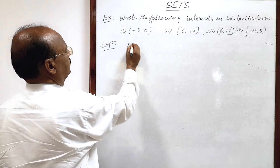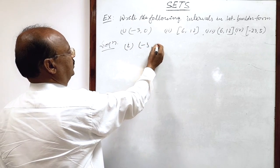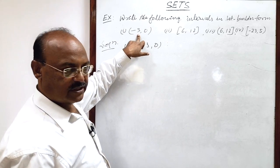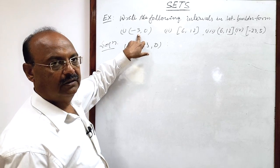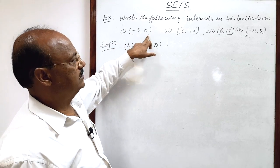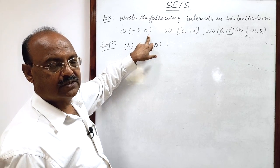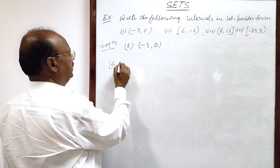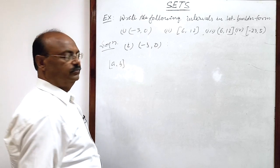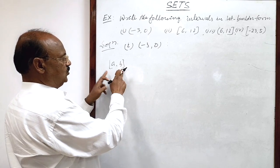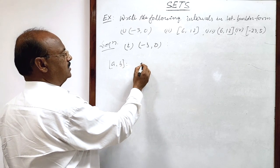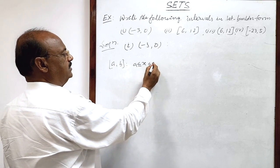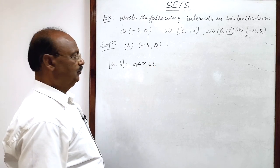The first interval is minus 3 to 0. We have to understand that this interval is open on both sides. Do you know what is the difference between open and closed? Suppose we write an interval like [a, b] — this bracket shows that it is closed. So in this case, all elements will be greater than or equal to a and less than or equal to b.